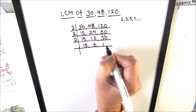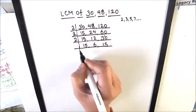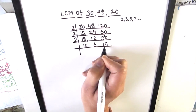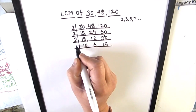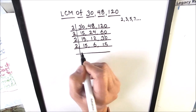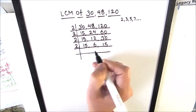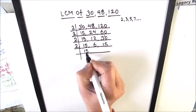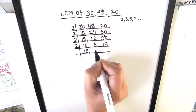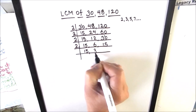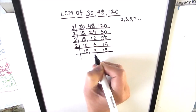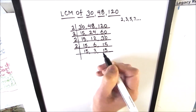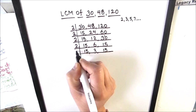Now we have 15, 6, and 15. The number 6 is divisible by 2, so we use 2 to divide 6 — giving us 3 — and 15 is written as is on both sides. Now 3 and 15 are both divisible by 3.